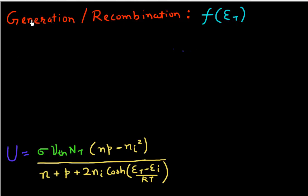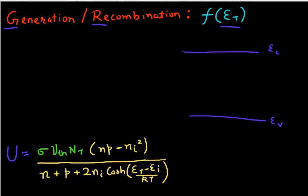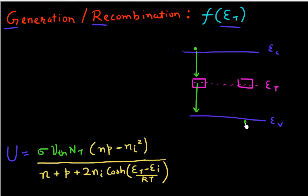In this video, I want to look at the functional dependence of recombination and generation on the energy level of the trap. Suppose I have a semiconductor with a conduction band and a valence band. I'm interested in how the recombination and generation rates depend upon where these trap levels are located — the energy of these trap levels. There could be a recombination process where an electron goes to a trap state and then recombines with a hole, or a generation process where an electron in the valence band goes to the trap state and then to the conduction band. I want to see how these rates depend upon where the trap level is located.